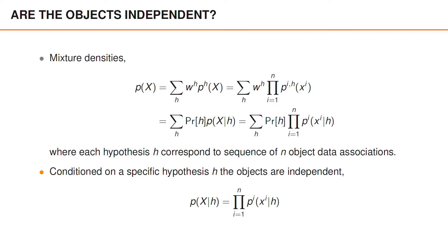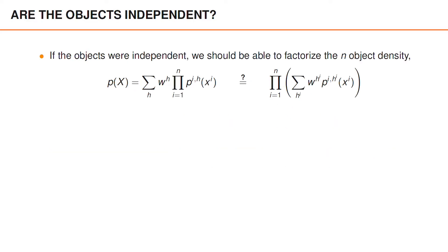For the objects to be independent, we have to consider the full mixture density. If the objects were to be independent, then we should be able to factorize the n-object density into a product for each object.